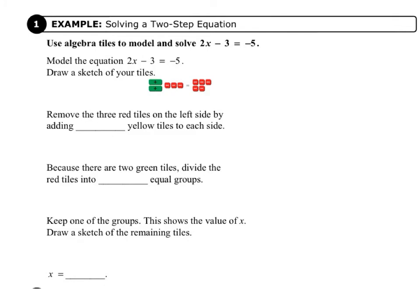Today we're going to be working on page 49 in your record and practice journal. Now, our first example is solving a Two-Step Equation. Use Algebra Tiles to model and solve 2x minus 3 equals negative 5. Model the equation 2x minus 3 equals negative 5. Draw a sketch of your tiles. I've drawn it for you below. Be sure you copy that into your record and practice journal.